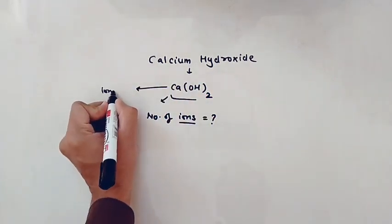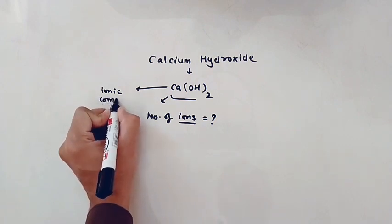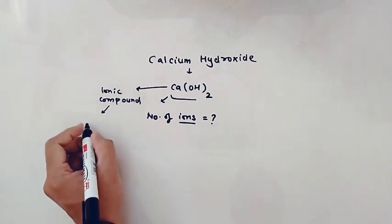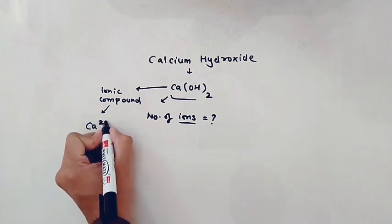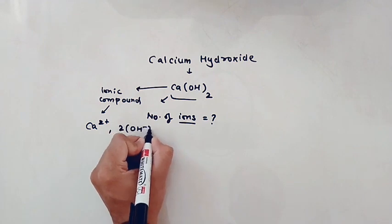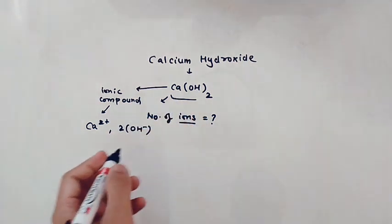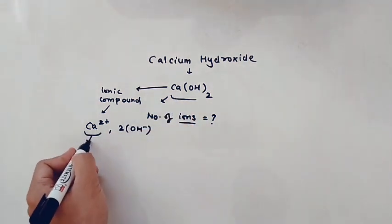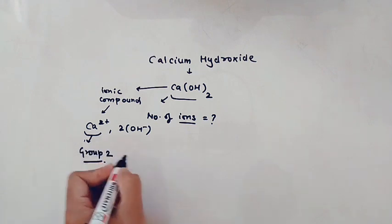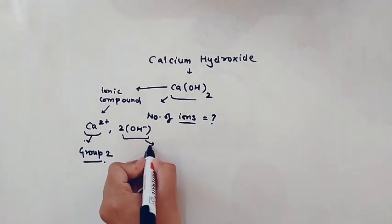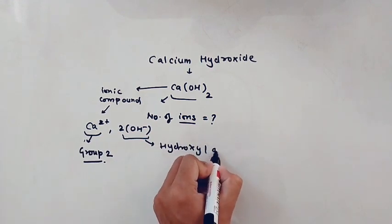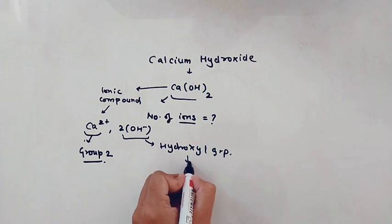It's made up of Ca²⁺ and 2OH⁻. Here Ca²⁺ belongs to group 2 of the periodic table, and this is our hydroxyl group, the non-metal.